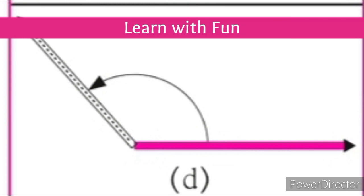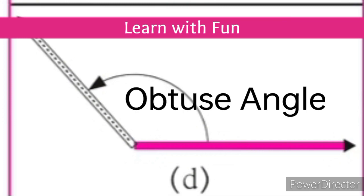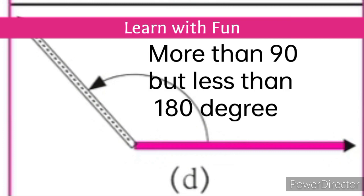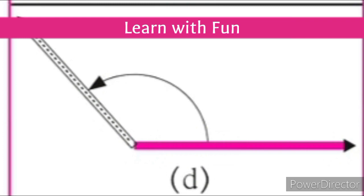The next type is obtuse angle. It is more than 90 degrees. The angle whose measure is greater than 90 degrees but less than 180 degrees is called an obtuse angle. In the given figure, the measure of the angle is near about 110 degrees. So, it is an obtuse angle — less than 180 but more than 90 degrees.